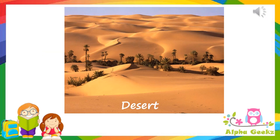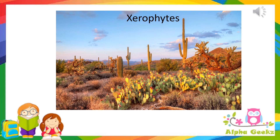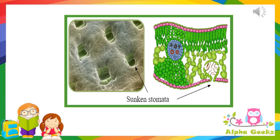Desert regions are very hot and dry with little rainfall, therefore there is a shortage of water. Plants that are found in deserts can survive with little water and are known as xerophytes. This is possible because xerophytes have sunken stomata, that is stomata in a small pit, where the stomata are embedded into the leaf layers rather than on the surface of the leaves. This prevents water loss from the plant.